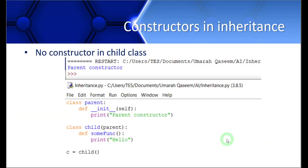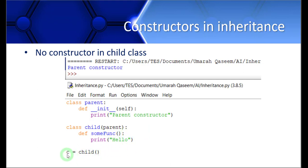Let's see the behavior of constructors during inheritance. I have created two classes here: the first one is the parent class, and the second one is the child class. The child class is inherited from the parent class. In the parent class, we have a constructor, but we don't have any constructor in the child class — just a function. In the body of the program, I created an object C of the child class, and the output displays 'parent constructor'.